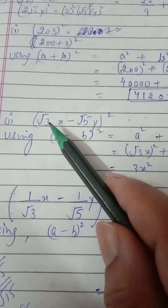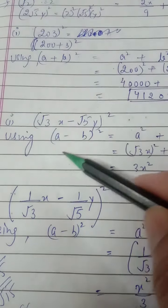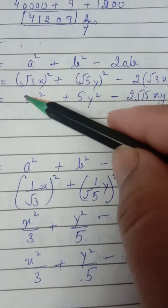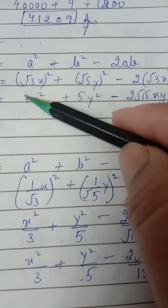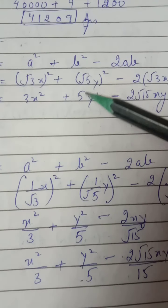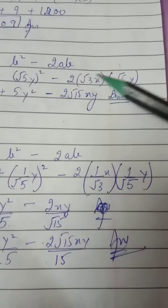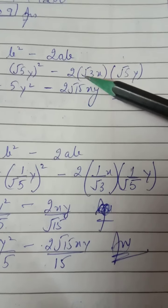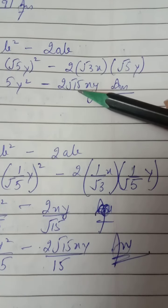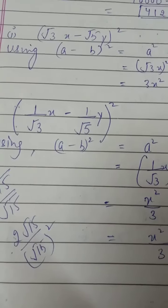Now moving on to the minus identity: the result will be a² + b² - 2ab. So (√3x - √5y)²: (√3)² = 3, x² = x², plus (√5)² = 5 and y² = y². For 2ab: outside the root we have 2, and under the root we multiply 3 and 5 to get √15, giving 2√15 xy. The next part is the same but with a fractional expression.